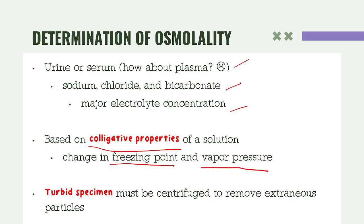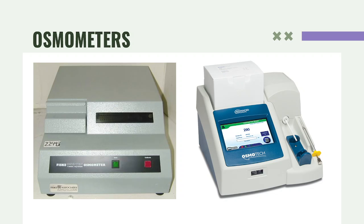Turbid specimens must be centrifuged to remove extraneous particles. Osmolality can be measured using a fully automated machine called an osmometer. Examples shown include an older-style osmometer and current modern ones. Since we are discussing freezing point depression, a short video will explain the mechanism.